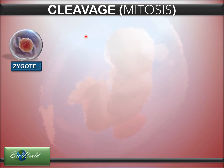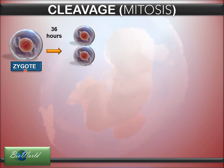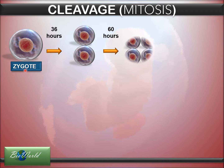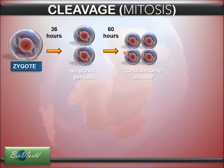The first step of embryonic development involves cleavage, which is multiple mitosis — mitosis carried out repeatedly to change this unicellular zygote into a multicellular tissue. The first mitosis takes 36 hours until two cells are formed; the second mitosis takes 60 hours to form four cells. Between each mitosis the cells are not given the opportunity to grow, so you will notice that the cells are actually becoming smaller.